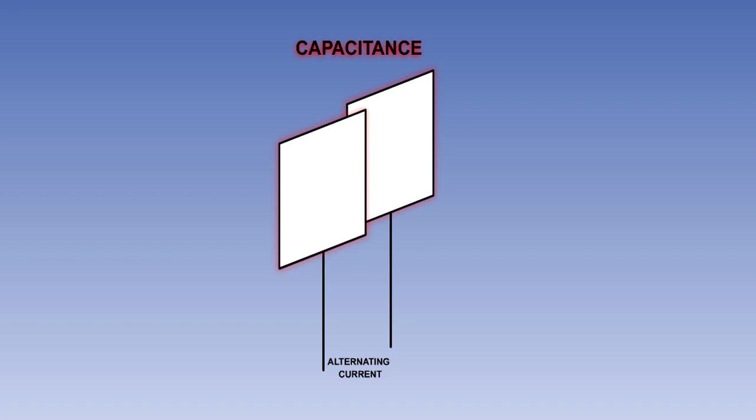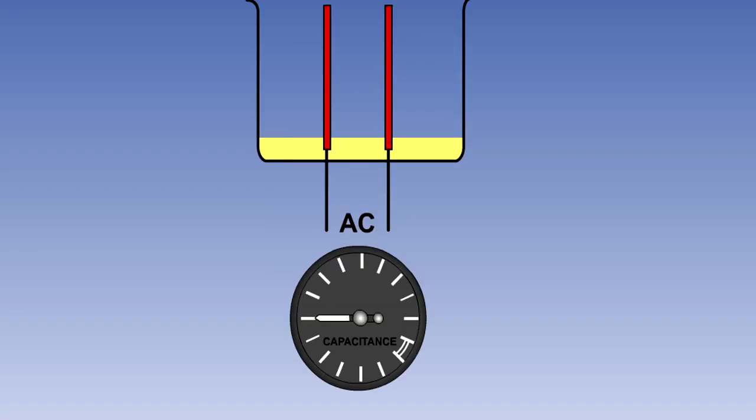Now we will look at the capacitive type of proximity sensor. Capacitance is a property that two plates of a suitable material placed in close proximity to each other have when an alternating current is applied to them. Once again, this is fully explained in the AC part of the syllabus. For now, all we need to know is that the capacitance of the plates will vary if the gap between them is filled with different materials, and that this change in capacitance can be measured.